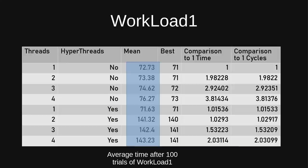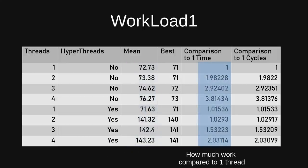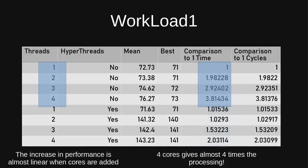So with multicore, as you add threads you're actually doing more work — four threads can do about four times the amount of work. In the comparison-to-one column, as we add cores the comparison time scales with the number of threads added. For three threads we're getting almost 2.92 times the performance of one thread, and for four threads running multicore we get about 3.81 times the performance. So that's pretty much what you'd expect — it's more or less linear. 3.81 is almost four, almost four times the workload.